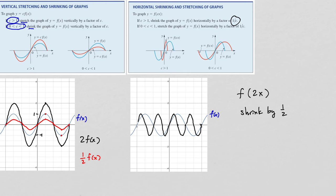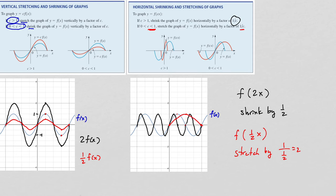For those of you who have taken trigonometry, you might recognize that this looks like a trigonometric graph. Now, what happens if I do something like f(½·x)? If the number c is less than 1, it's going to stretch it by a factor of 1/c. So this is going to be a stretch by 1 over ½, which equals 2. That makes the x values twice as big as what they used to be. The point at the origin doesn't change, but the other points move out to twice their size — in other words, it gets stretched horizontally.